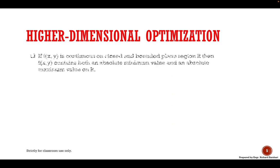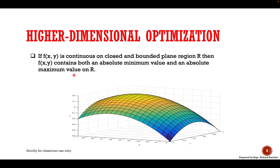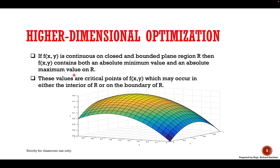For higher dimensional optimization, if f of xy is continuous on closed and bounded plane region R, then f of xy contains both an absolute minimum value and an absolute maximum value on the region R. These values are critical points of f of xy which may occur either in the interior of the region R or on the boundary of R.